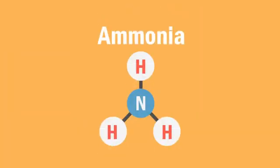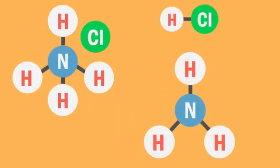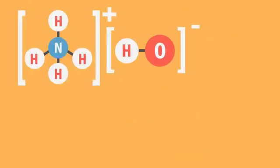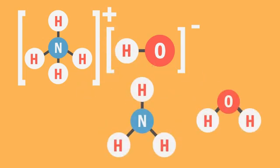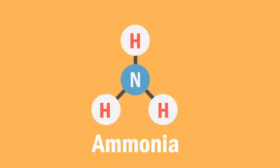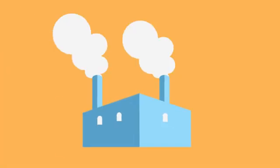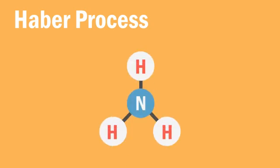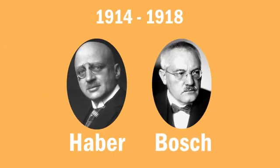You have likely produced ammonia in the laboratory, from the thermal decomposition of ammonium chloride or from the reaction of ammonium hydroxide ions. Have you ever wondered how ammonia is produced on an industrial scale? In this lesson, we will learn about the Haber process to produce ammonia, developed during World War I by Fritz Haber and Karl Bosch.